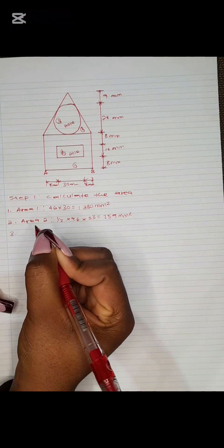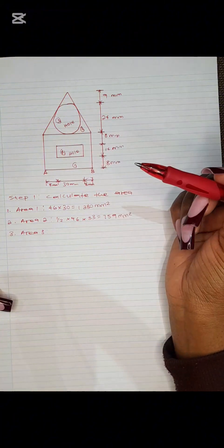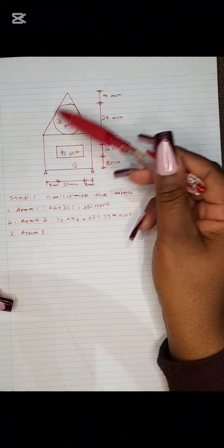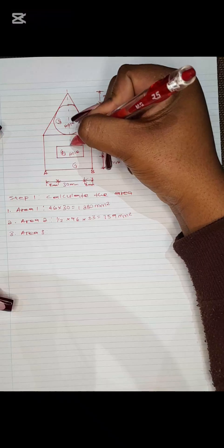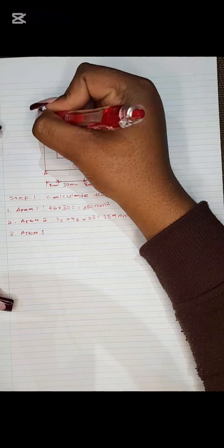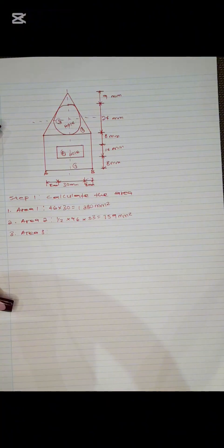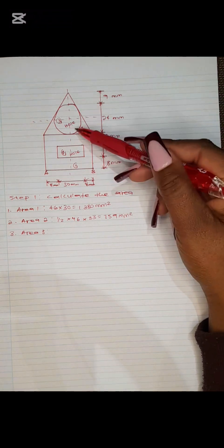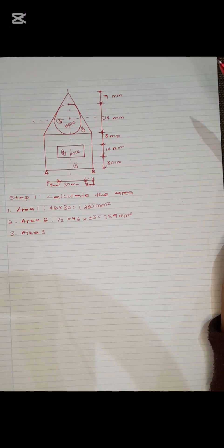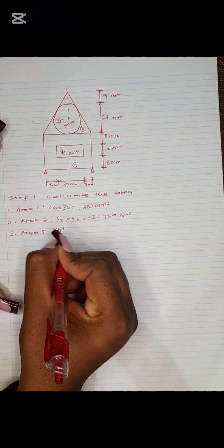Now Area 3 is the circle. If you are given a diameter, use the diameter formula. In our case we are given a diameter of 24. So the area of the circle would be π × d² ÷ 4.